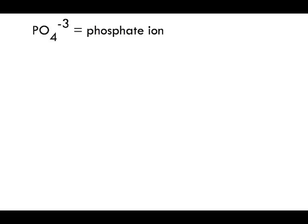Students often ask how to draw some of these polyatomic ions. Here we have the phosphate ion PO4 negative 3. One of the biggest things students struggle with is what to do with this negative 3, so let's first focus on the actual atoms that we have.